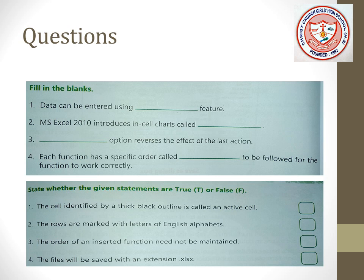Number one: The cell identified by a thick black outline is called an active cell — the statement is true. Number two: The rows are marked with letters of the English alphabet — the statement is false; rows are marked with numbers.